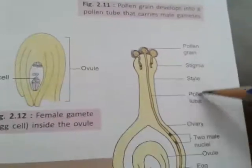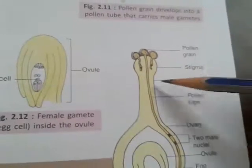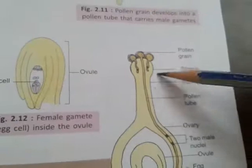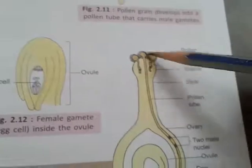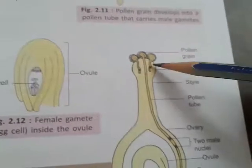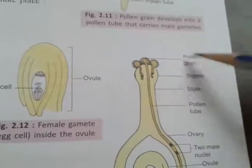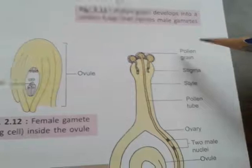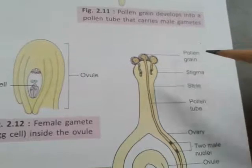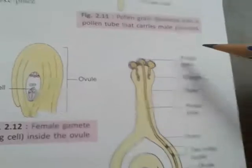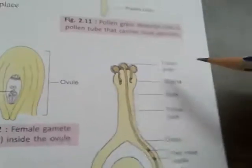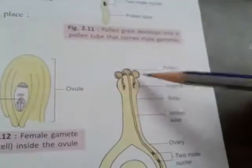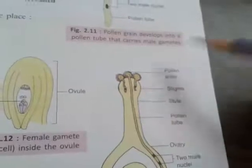After landing on the stigma, the style carries the whole pollen grains toward the ovary. In this diagram, you can see the ovary, the pollen tube, the style, the stigma, and all the pollen grains — which have come from the anther, the male part.